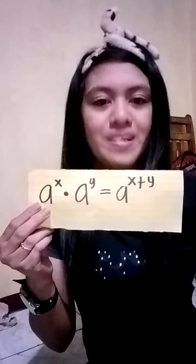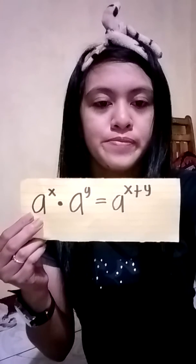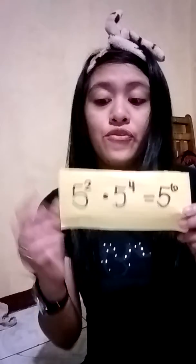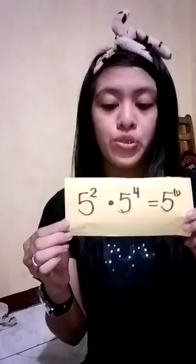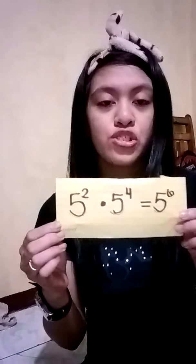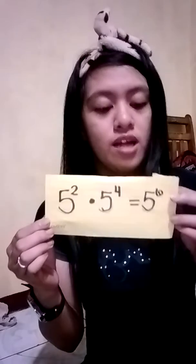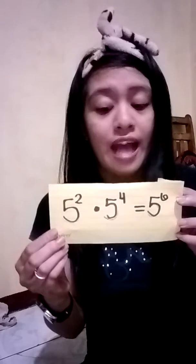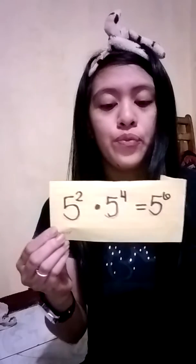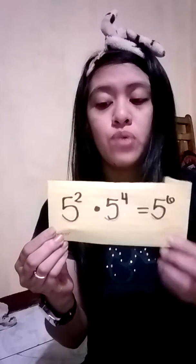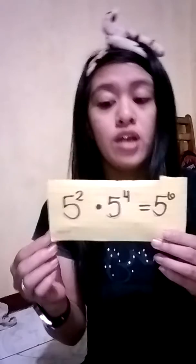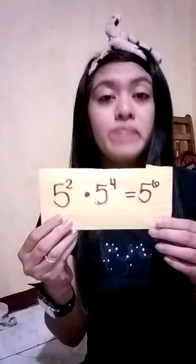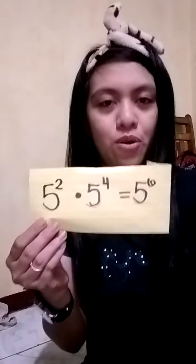So I will give you some examples. So this: 5 raised to the power of 2 times 5 raised to the power of 4. We come up with the answer of 5 raised to the power of 6. Why? Because like what I said, we will only add each exponent, which are the 2 and 4. 2 plus 4 is equal to 6. That's why our final answer will be 5 raised to the power of 6.